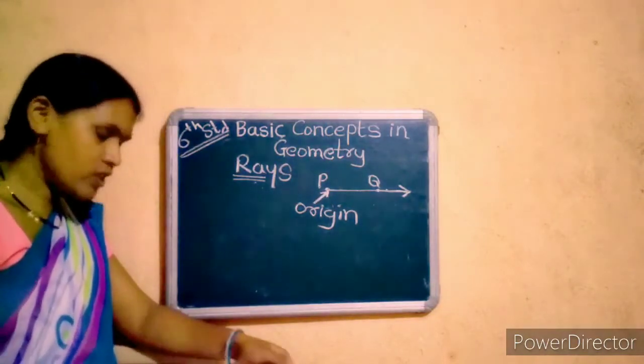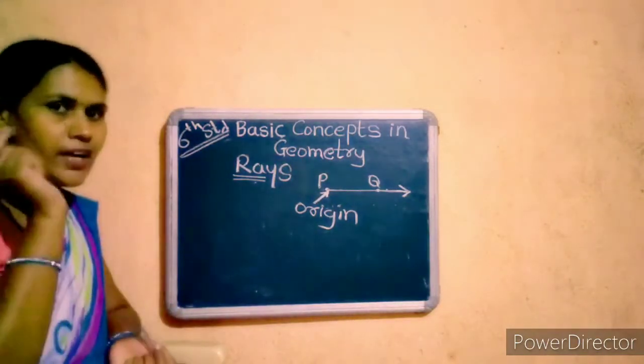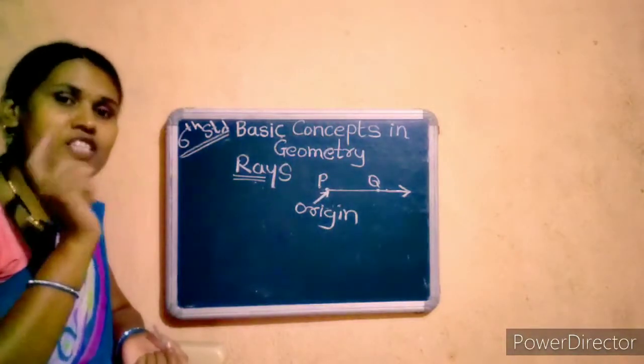The starting point of a ray is called its origin.